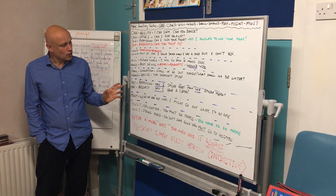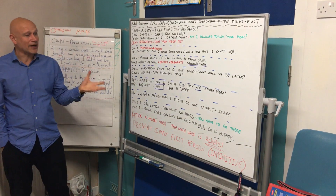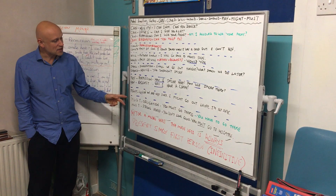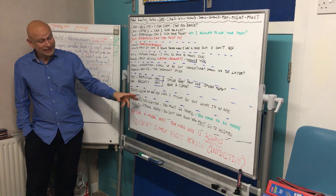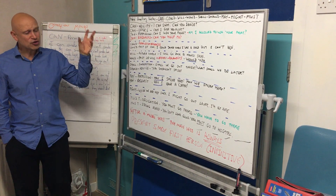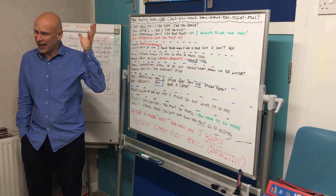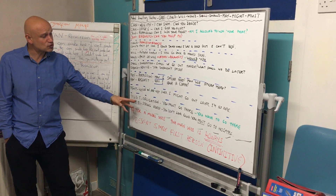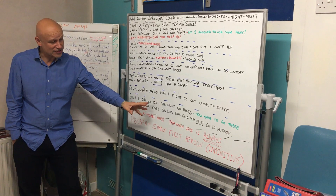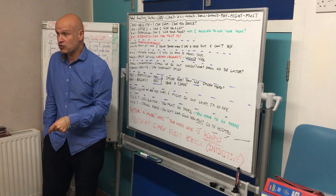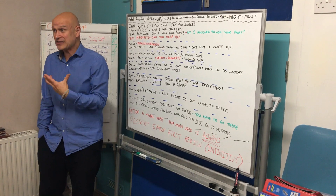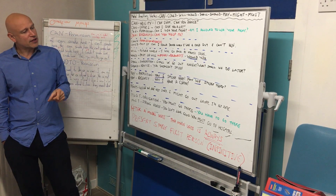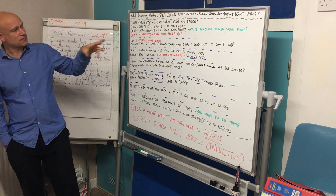'Might' is used when we're not sure about something: I might go out later, I'm not sure. 'Must' is for obligation: you must go there, you really have to do that. It could also be strong advice: you don't look good, you must go to a hospital — that's my advice.